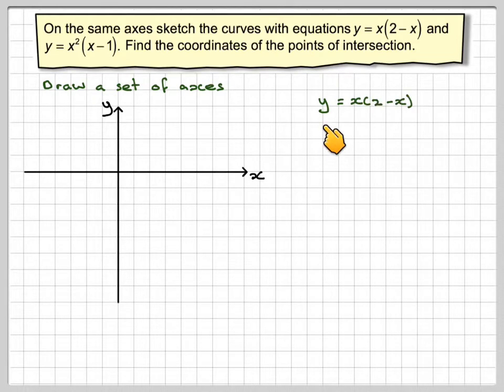Let's look at the first one, which is the quadratic. y = x(2-x). Why do I know that's a quadratic? Because if I expand the brackets, we get x times -x, which gives me -x², and x times 2, which gives me +2x.